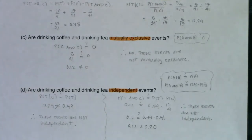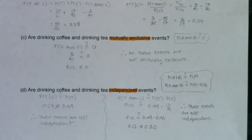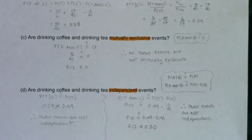So we've taken a look at the same set of data using Venn diagrams and using tables, and we got the same results. We're going to work another table problem, and then after that we'll head on into tree diagrams.